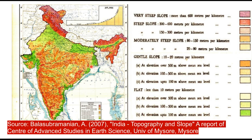The elevation difference of interior flatlands may range from 10 to 20 meter per kilometer and they mostly exist in the interior parts of India adjacent to the coastal zone, running from Cape Comorin of Tamil Nadu in the south to Narnol of Haryana in the north. The entire southern part of northern India consists of interior flatlands, distributed along the Indo-Gangetic plains from Mathura in the west to Patna in the east.